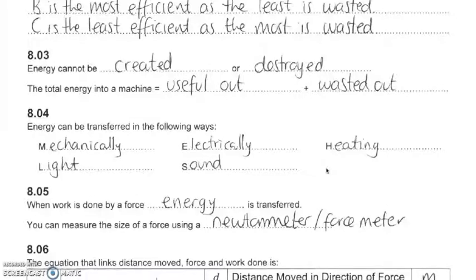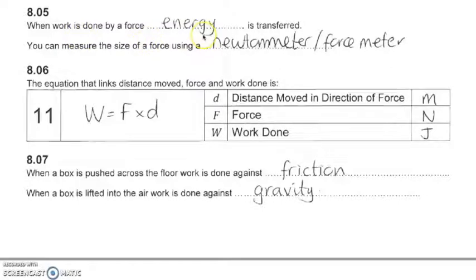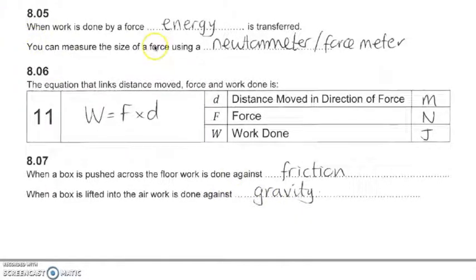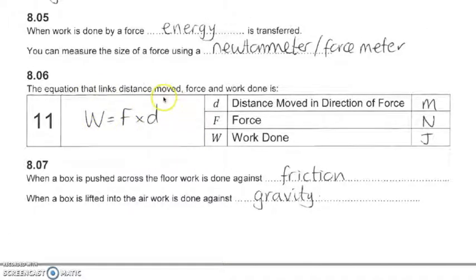When work is done by a force, energy is transferred. We measure force with a newton meter or force meter. Work done is equal to the force multiplied by the distance moved in the direction of the force. Work done has units of joules, meaning it is essentially energy. When a box is pushed across the floor, work is done against friction; when a box is lifted into the air, work is done against gravity.